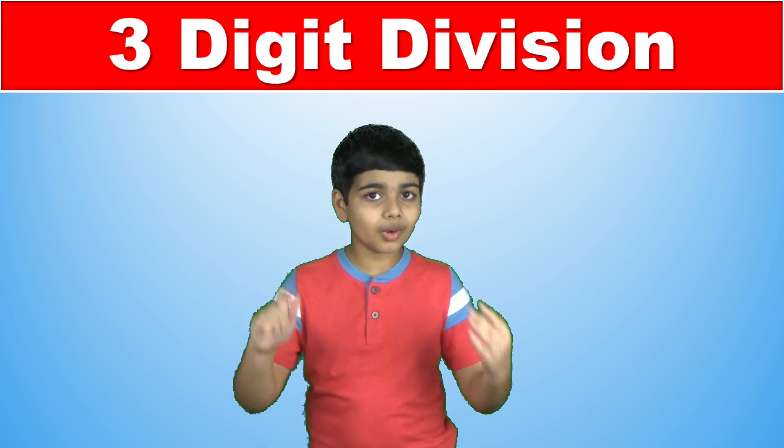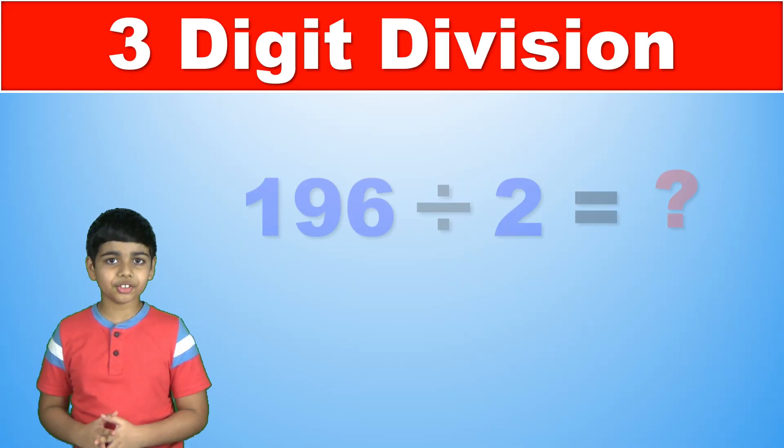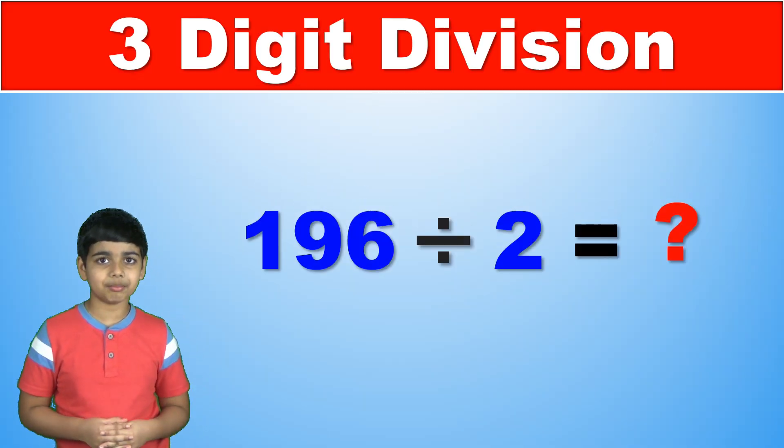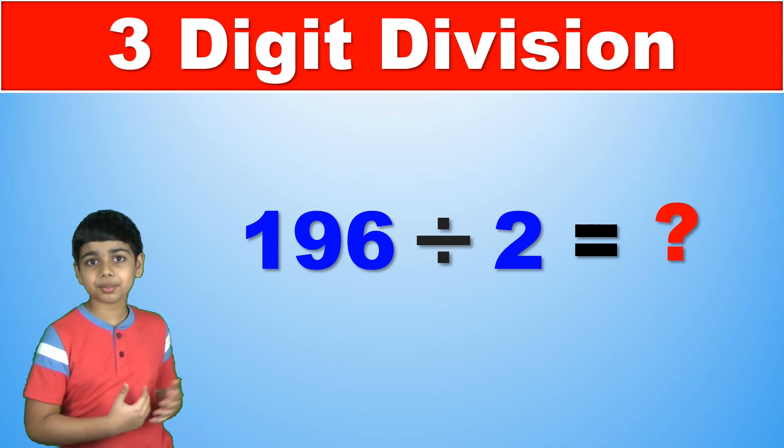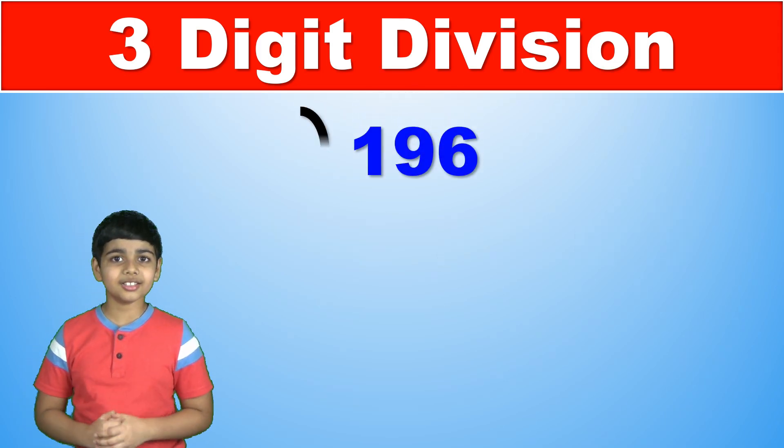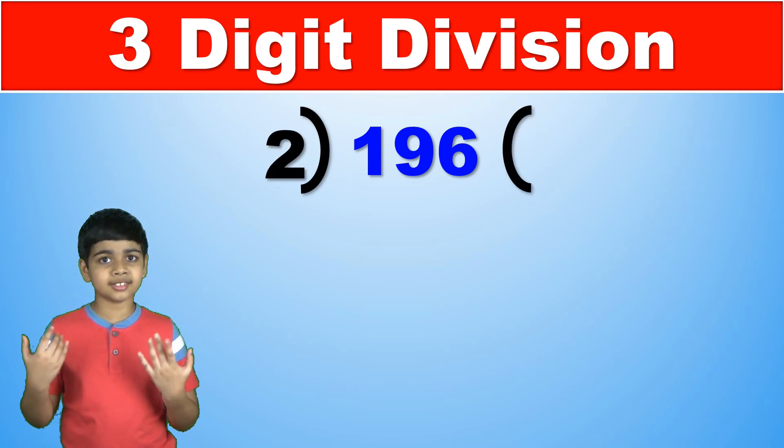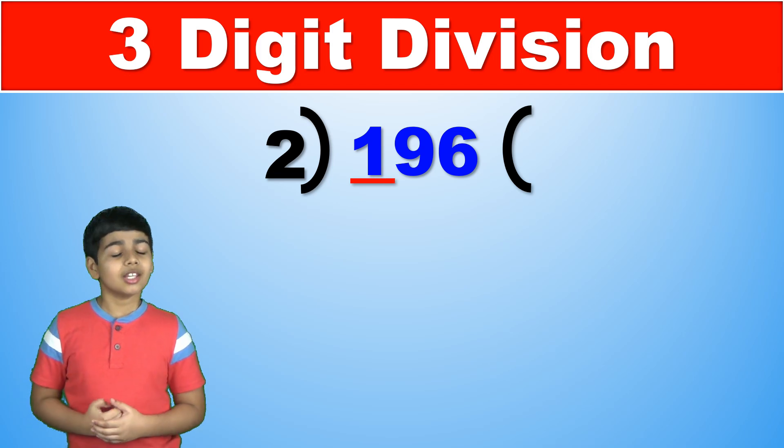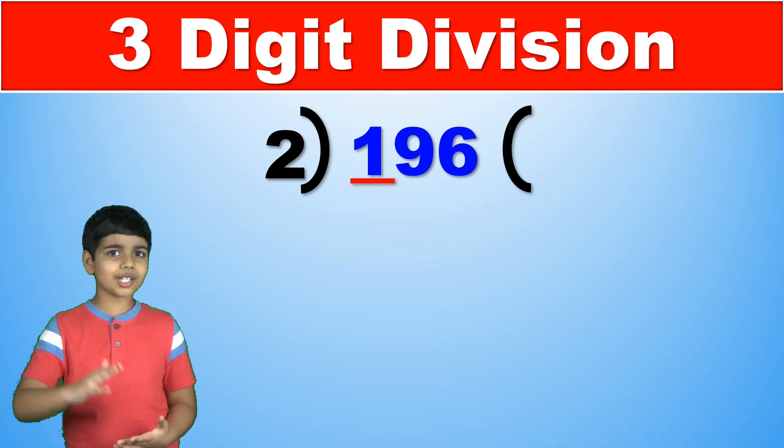So let's jump right into it with our first example 196 divided by 2. Now the way we're going to do this problem is we're going to take a look at the first digit of 196 which is 1, and then we ask ourselves is 1 greater than 2?